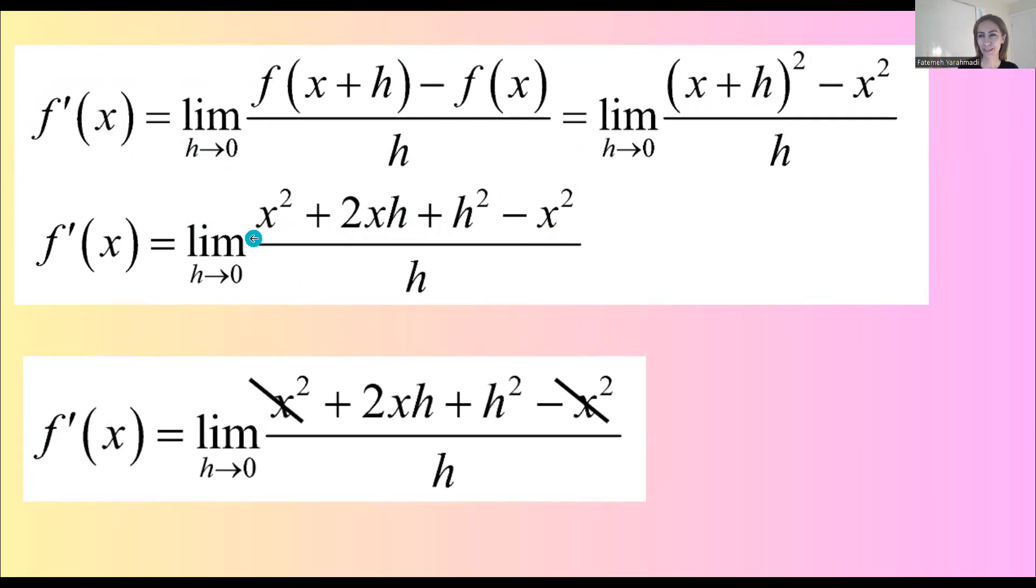So on the numerator, notice that you have x squared minus x squared. These two terms get cancelled out because they are opposite of each other.